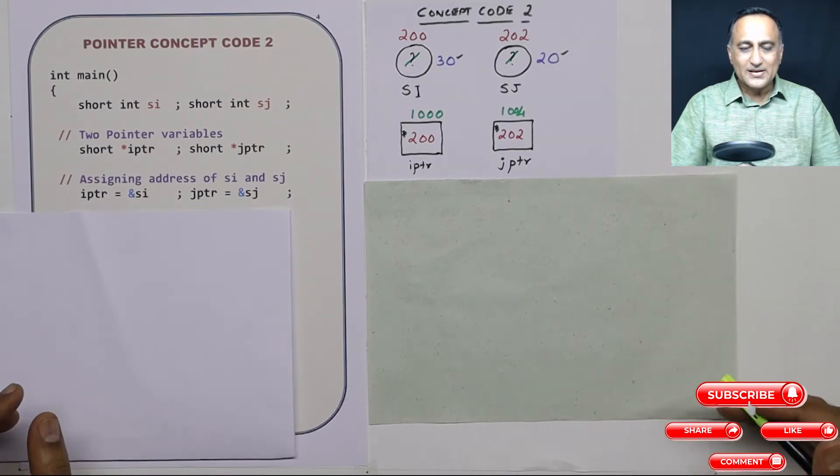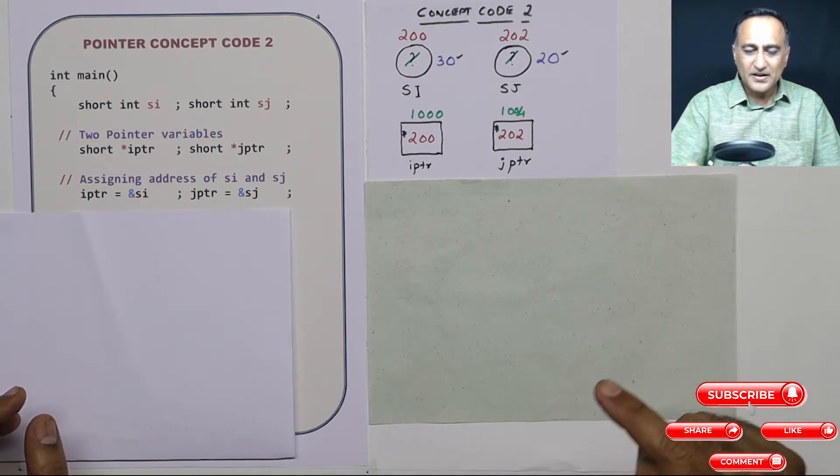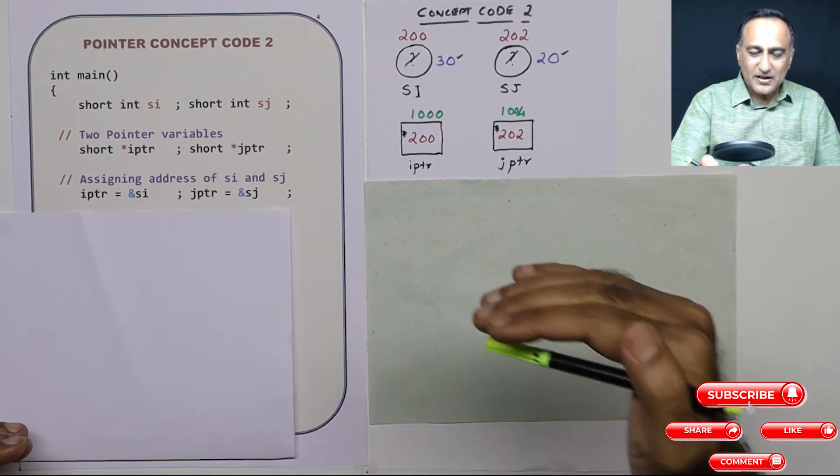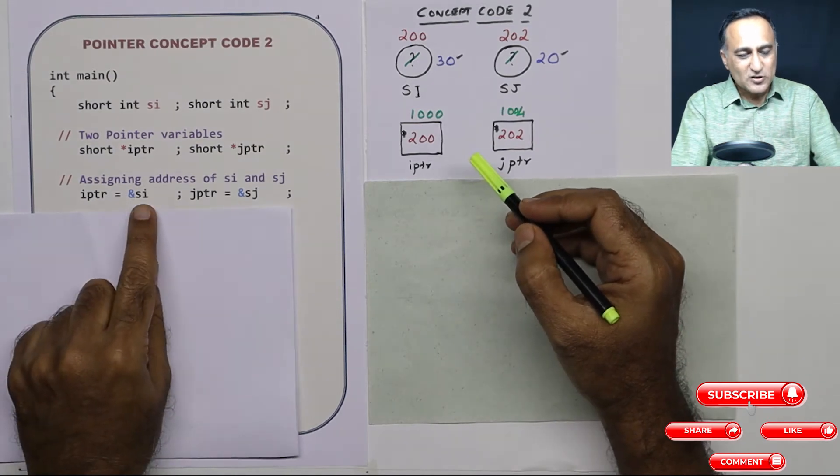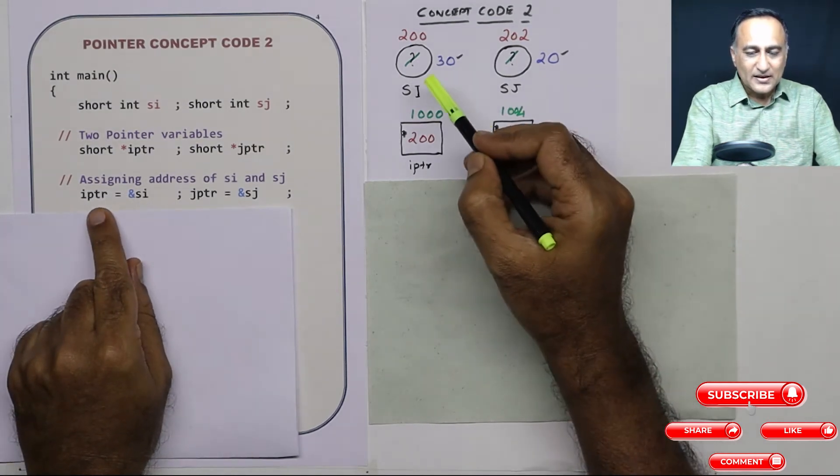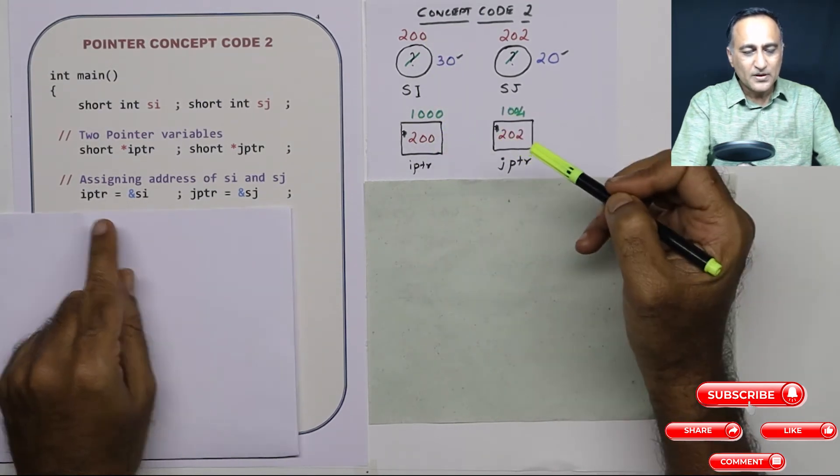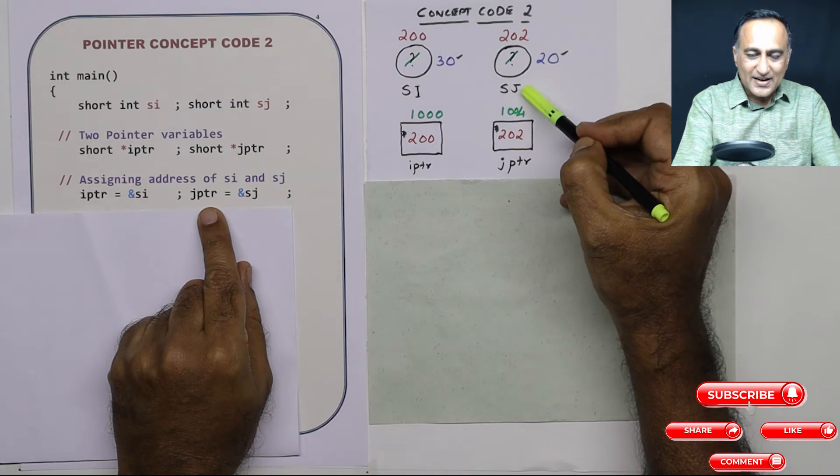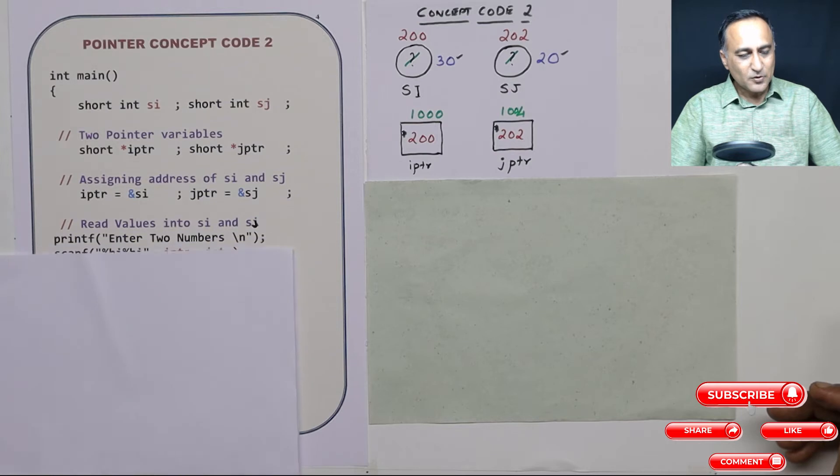Now what I am doing is I am copying the address of SI and sj into IPTR and JPTR. Why am I doing it? Because star IPTR and star JPTR are special kind of variables which can only keep addresses in them. So when I say address of SI is given to IPTR, the address of SI which is 200 gets stored in IPTR. When I say address of sj is given to JPTR, 202 which is the address of sj gets stored in JPTR.